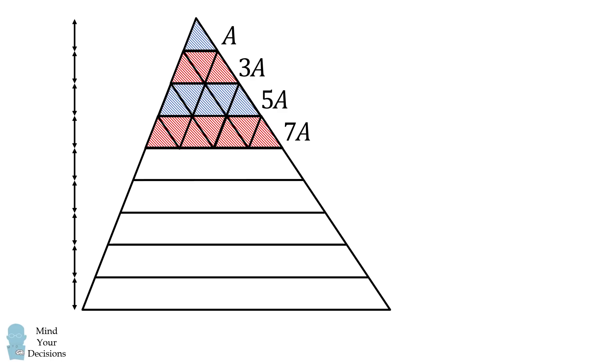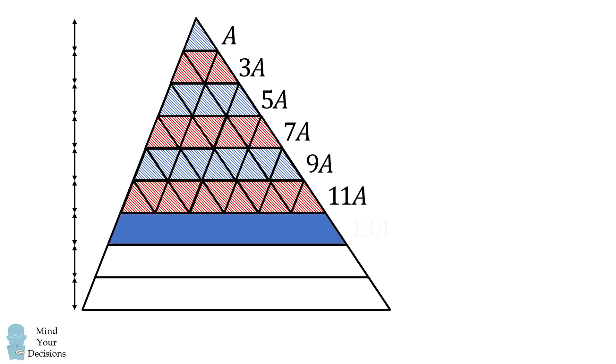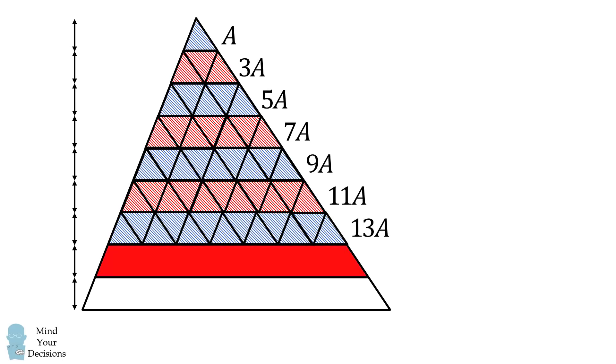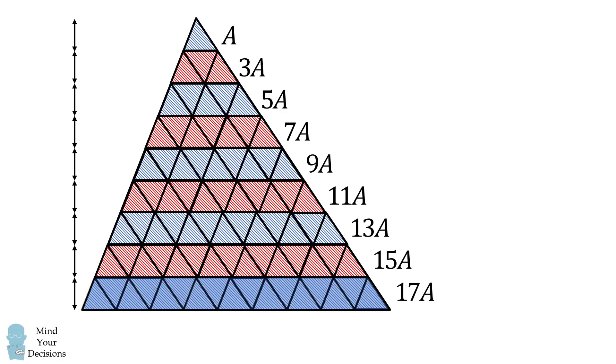Each next stripe will have an area that's two more than the previous one. So this stripe will be equal to 9A. We also fit nine triangles in there. Then it'll be equal to 11A. We then have it equal to 13A. Then it'll be equal to 15A. And the final stripe will be equal to 17A.